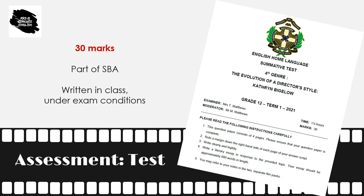The second assessment is the formal test, which is written under exam conditions. It counts 30 marks. This year, it will be in the format of a literary essay in response to the director and films that we are studying. As you see, it's 30 marks included in the SBA mark. There are no other assessments for the fourth genre.